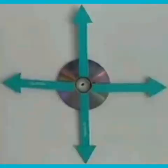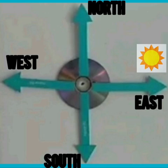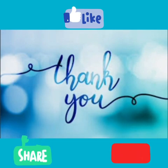Let's try one more activity. You can use an old CD, cardboard strips, or ice cream sticks to show the four main directions. You can even draw the rising sun. Always remember, we made use of the rising sun to determine directions. Other components of nature can also be of help to us. Thank you, and please like, share, and subscribe.